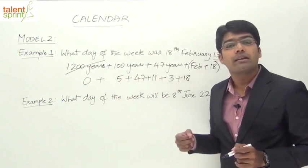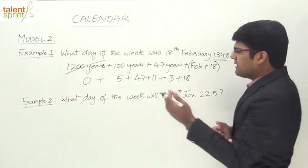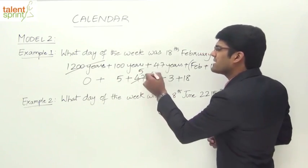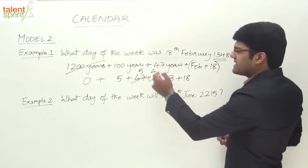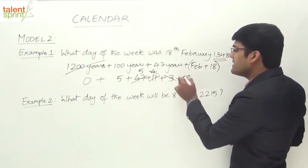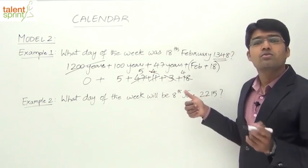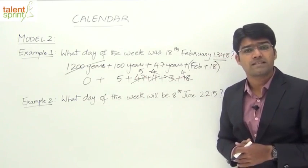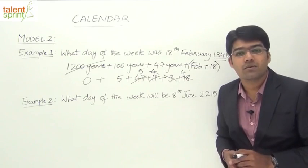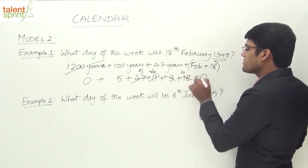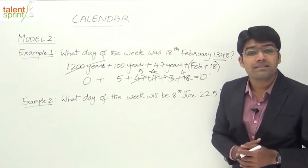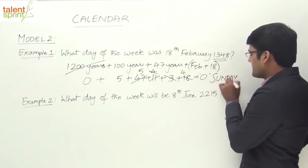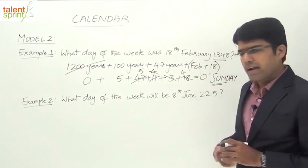Adding all values: 47 = 6 weeks + 5 days (5 odd days); 11 = 1 week + 4 days (4 odd days); 4 + 3 = 7 = 0 odd days; 18 = 2 weeks + 4 days (4 odd days). Total: 5 + 5 + 4 = 14 odd days, and 14 odd days = 2 complete weeks = 0 odd days. Zero odd days corresponds to Sunday, so 18th February 1348 was a Sunday.